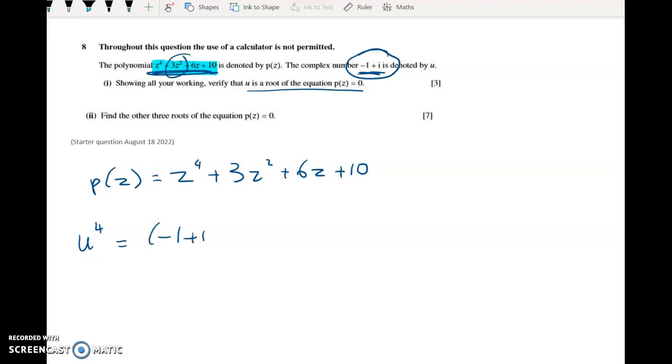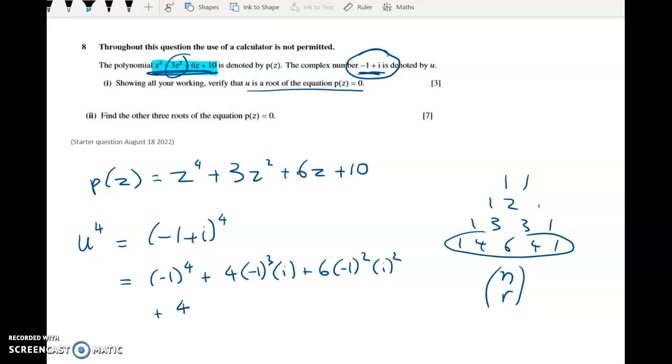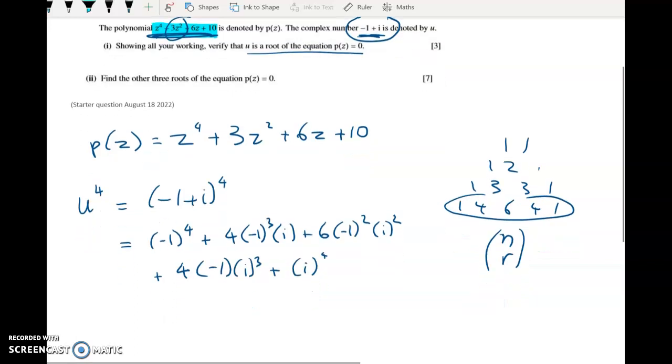So u to the power of 4 is negative 1 plus i to the power of 4 which is a binomial expansion. So I'll do that using Pascal's triangle row 4 or you could use the ncr coefficients but this one is so fast if you use Pascal's triangle. So getting on with it we're going to have 1 times negative 1 to the power of 4 plus 4 times negative 1 cubed times i to the power of 1 plus 6 times negative 1 squared times i squared and so on. So we've got the last two terms work out to be this and then lastly we've got just one lot of i to the power of 4.